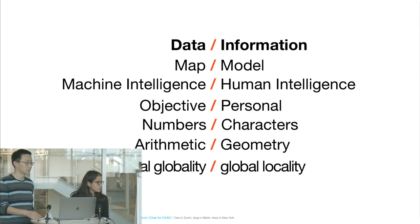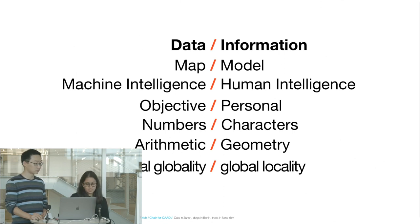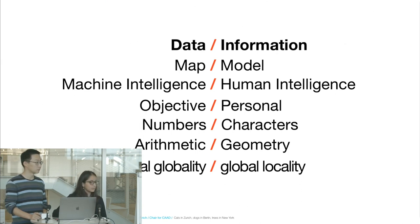Today we're going to talk about how to collect data, so you will get access to all the data you want to work with. First, let's revisit the symmetry we discussed in the first lecture. On the data side, we have the map and machine intelligence — objective, working with numbers, arithmetics, and representing a local globality.